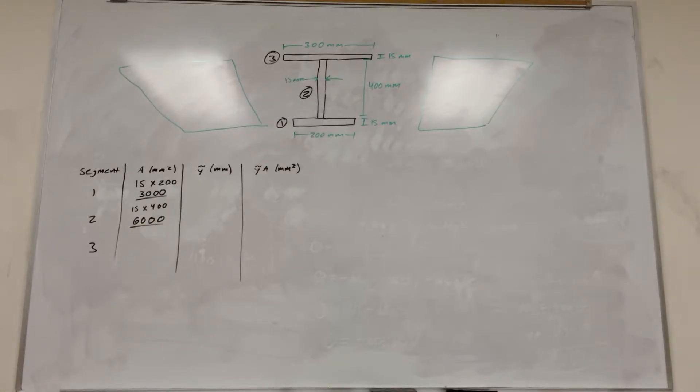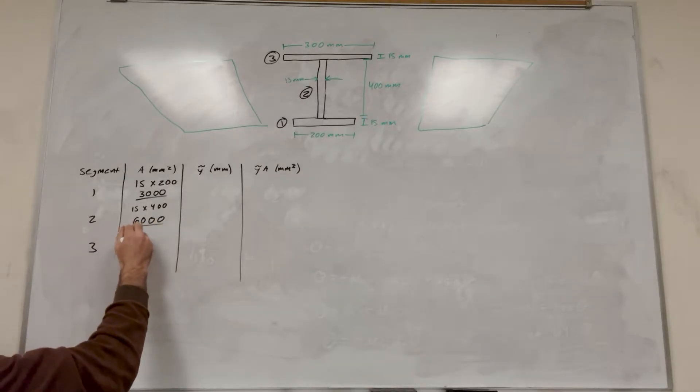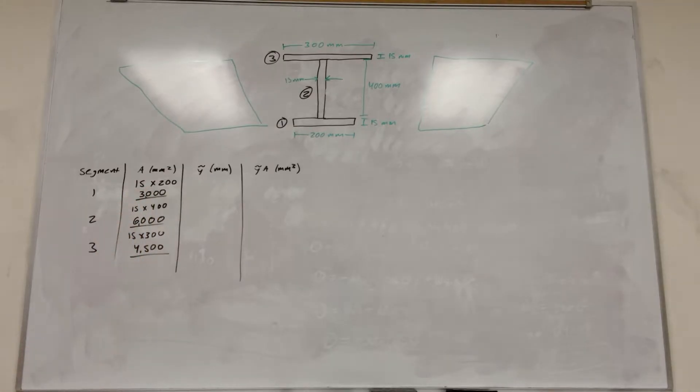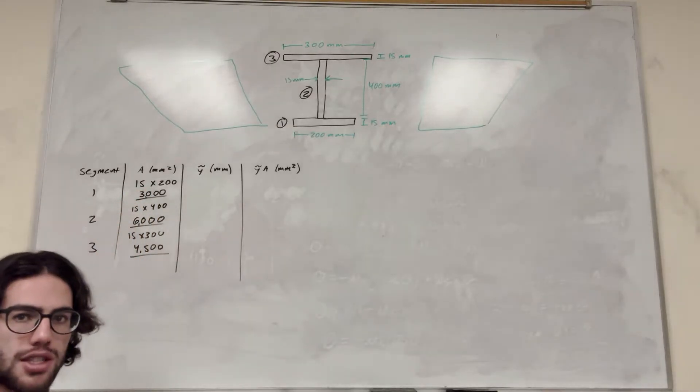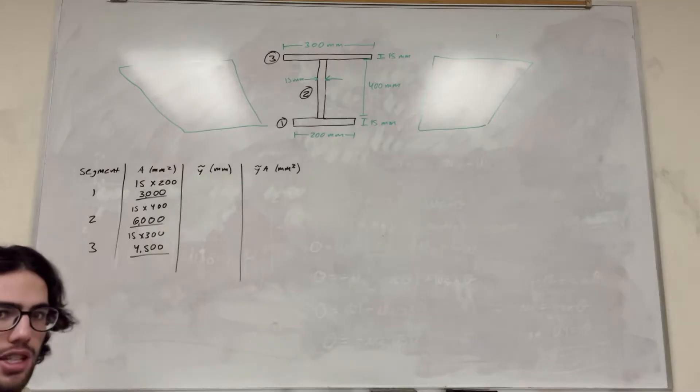Right? And the last one is 300 long and 15 tall. So 15 times 300 is 4,500. Right? So these are millimeters squared, so we're going to make sure that our answer is going to stay in millimeters.